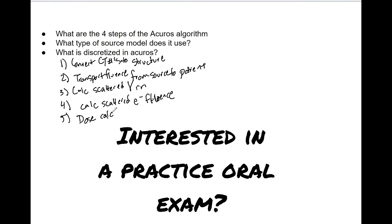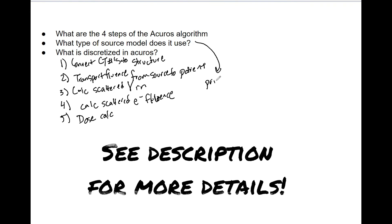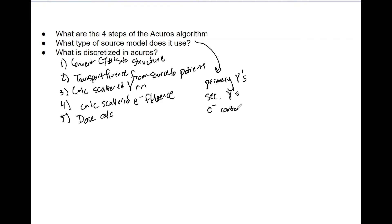So what type of source model does it use? This does use the same source model that AAA does use - that being that it models primary photons, and then we've got our secondary photons and we've got our electron contamination.